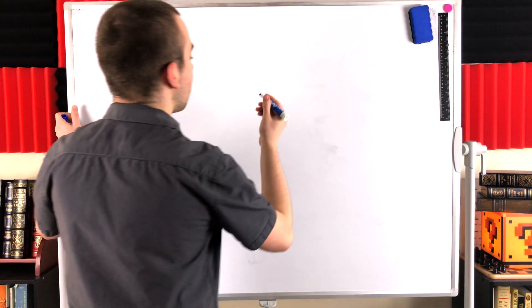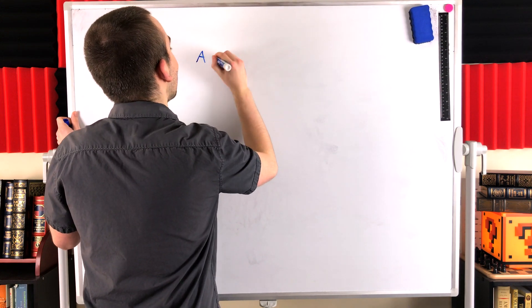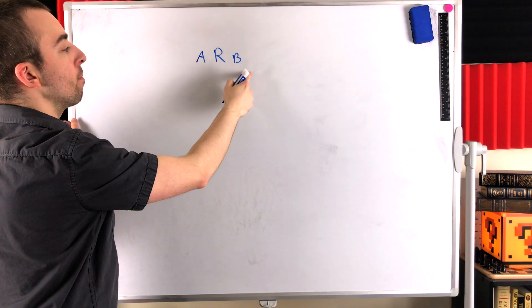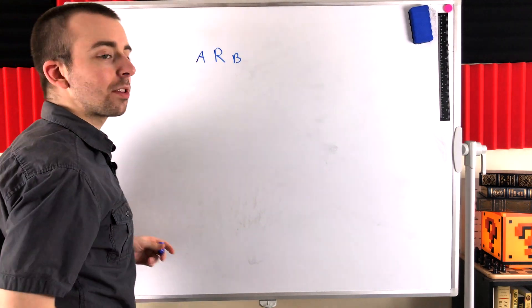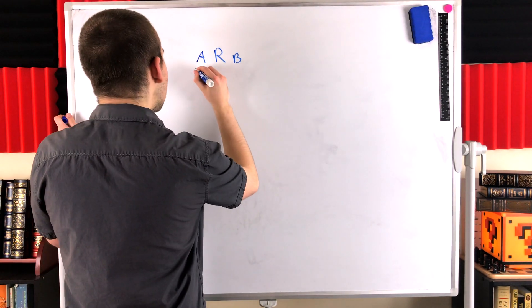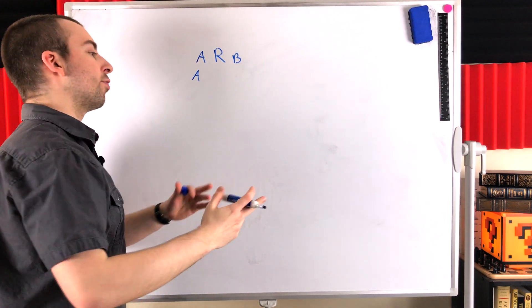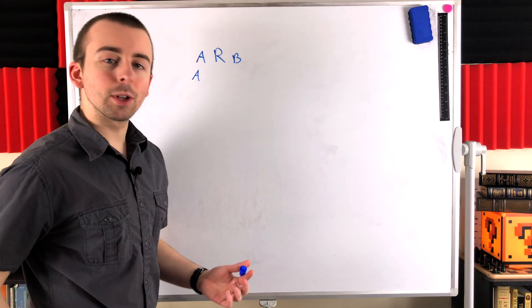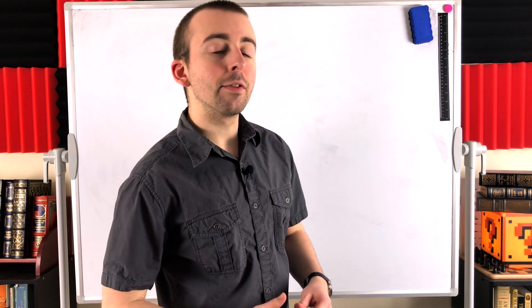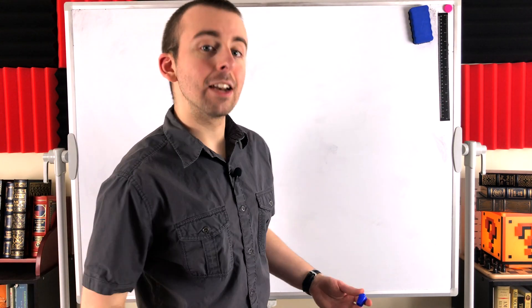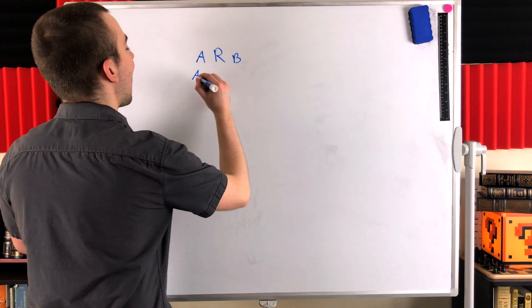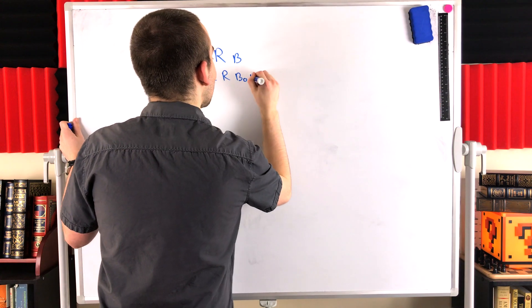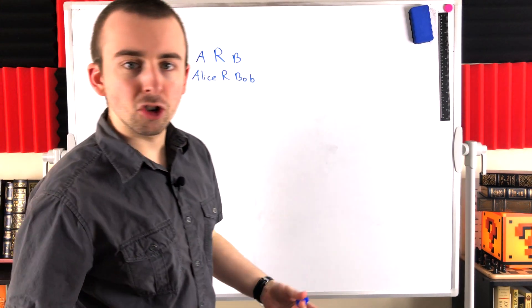It does the same thing in math. For example, we could say that a person A relates to a person B, and write it like that — A R B — meaning A relates to B under this relation R. And we might define a particular type of relation like handshaking. We could say person A relates to person B if they have shaken hands. And maybe Alice has shaken Bob's hand, so we could say Alice R Bob — Alice relates to Bob under this handshaking relation.